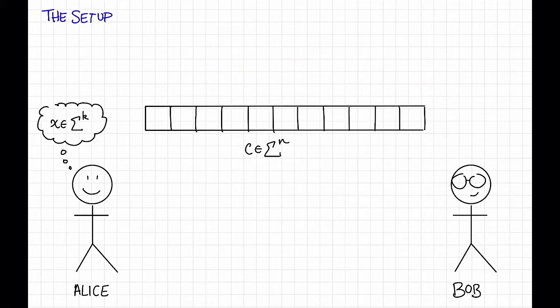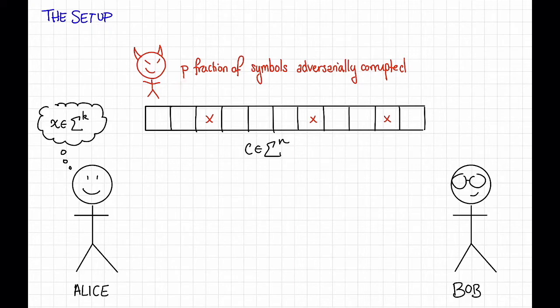And as usual, something bad is going to happen. As is normal for us, the bad thing that's going to happen is that some p fraction of symbols are going to be adversarially corrupted. So there's some bad guy, pictured here, who's going to corrupt some p fraction of the symbols. That will give us a corrupted code word c twiddle. So far, this is exactly the same as what we've been talking about before.